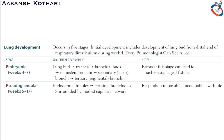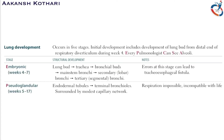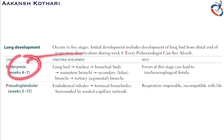The embryonic stage spans week four to week seven. From the lung bud, the trachea forms, which then forms bronchial buds. These bronchial buds differentiate into the primary (main stem) bronchi, secondary (lobar) bronchi, and tertiary (segmental) bronchi. Errors in the embryonic stage can cause tracheoesophageal fistula.